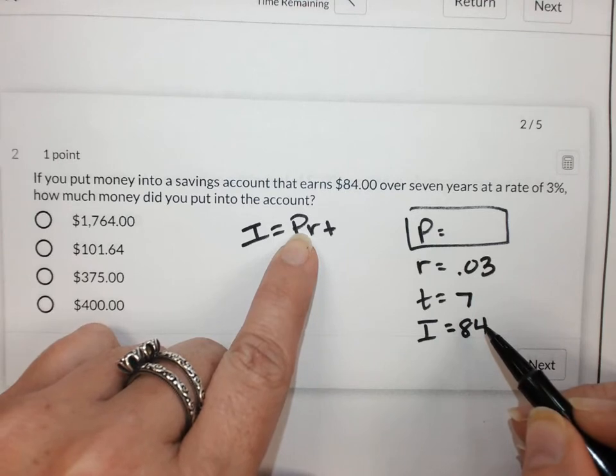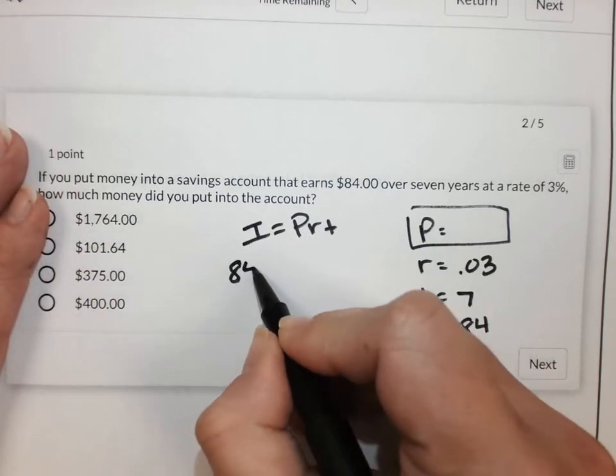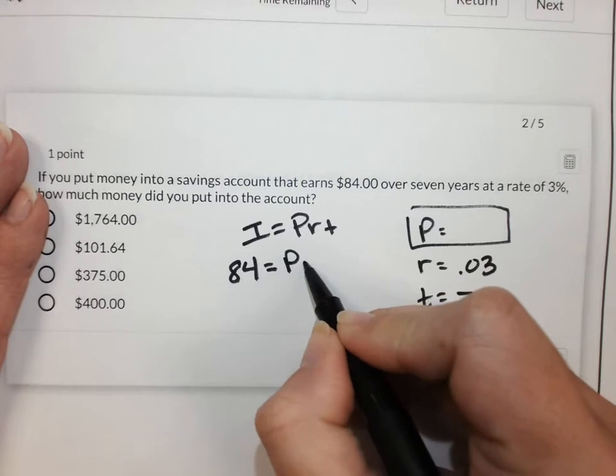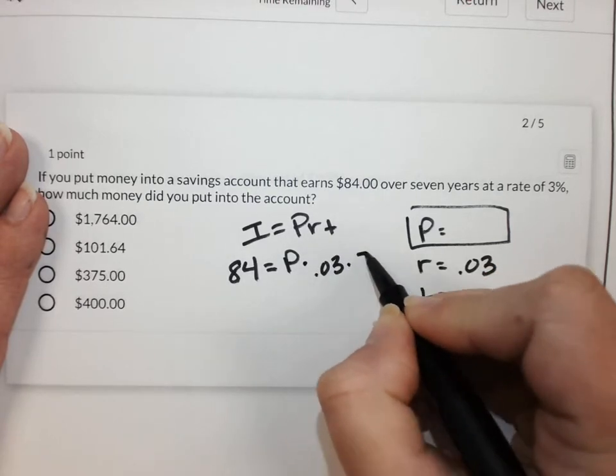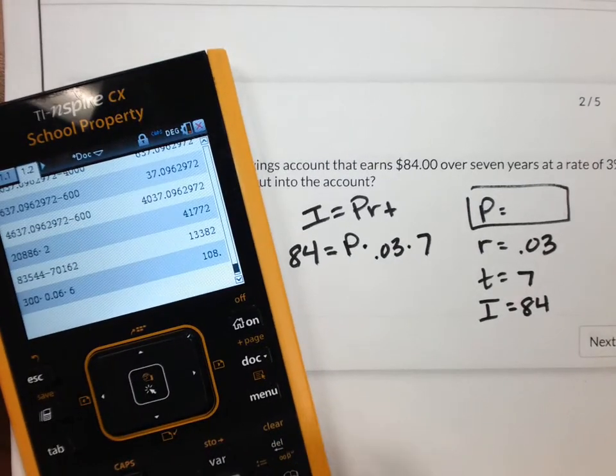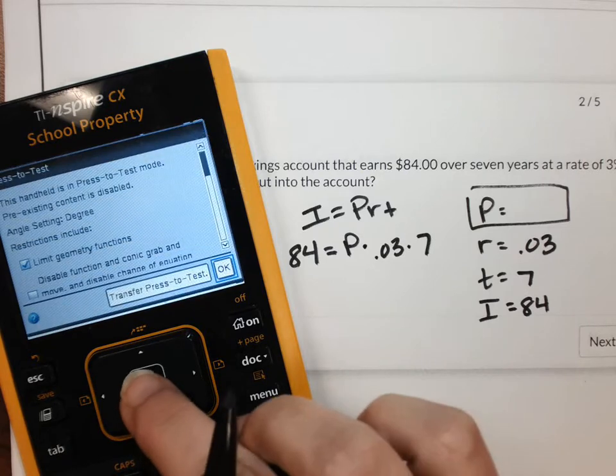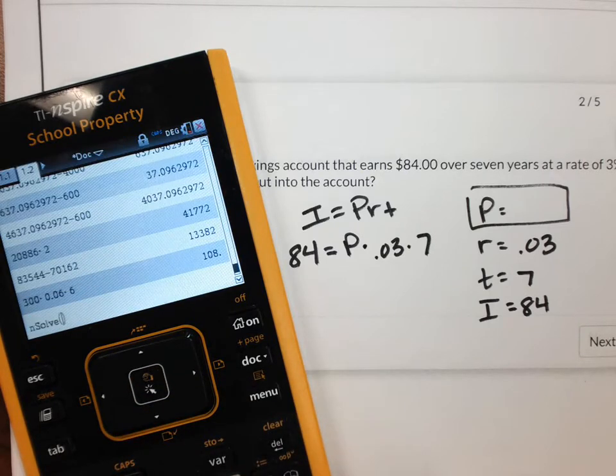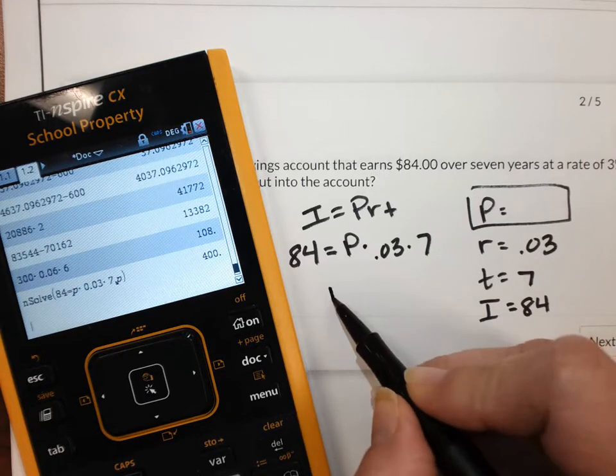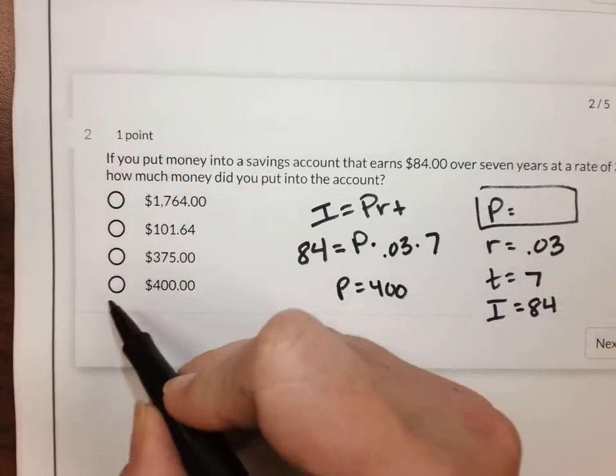And then we're going to solve for P. So 84 equals P times .03 times 7. And we're getting P is equal to $400.